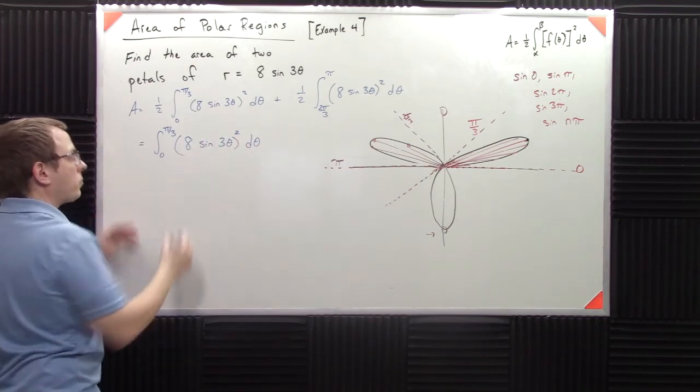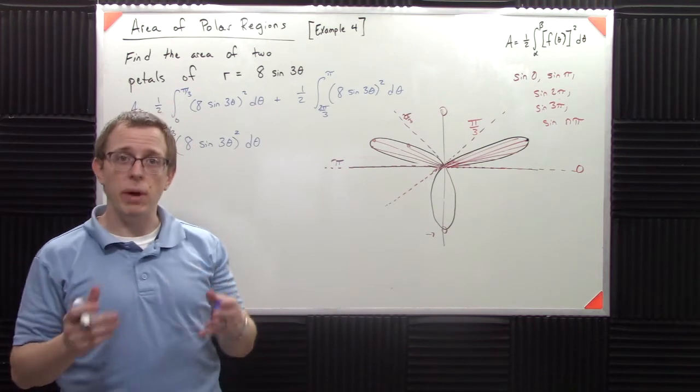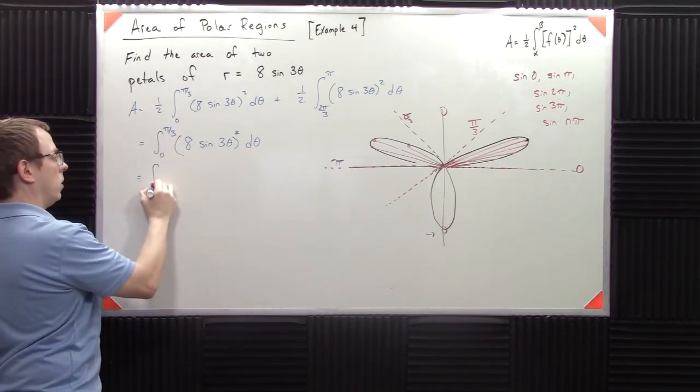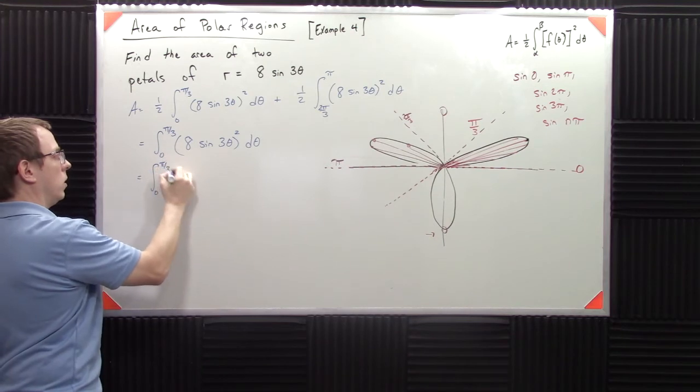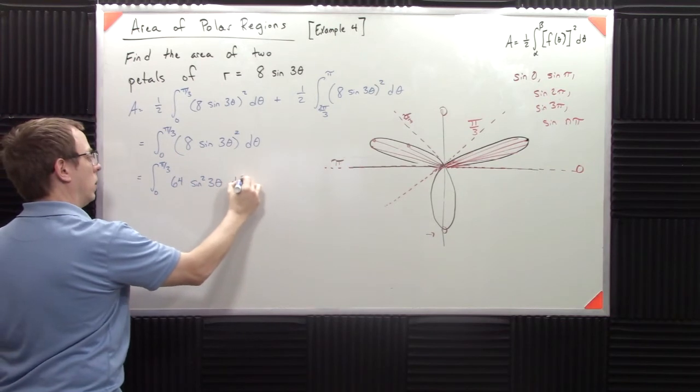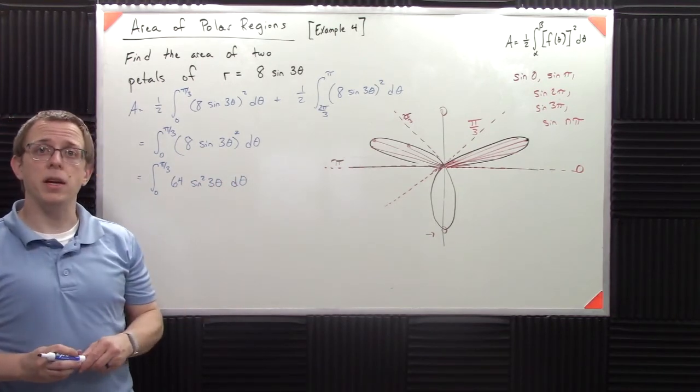Now the nice part is we had a one half, so when we doubled it, that went away. Now we have to square this thing and solve it. So 64 sine squared three theta d theta.